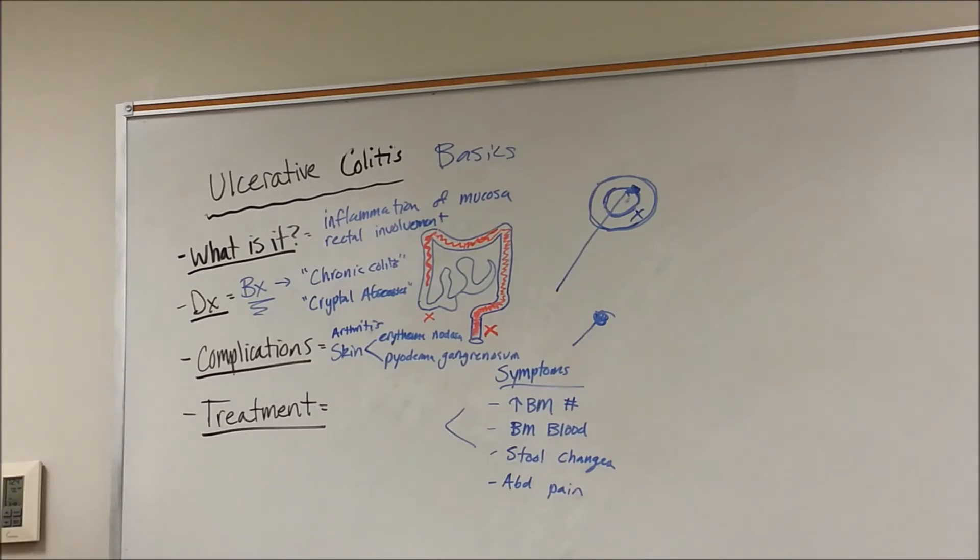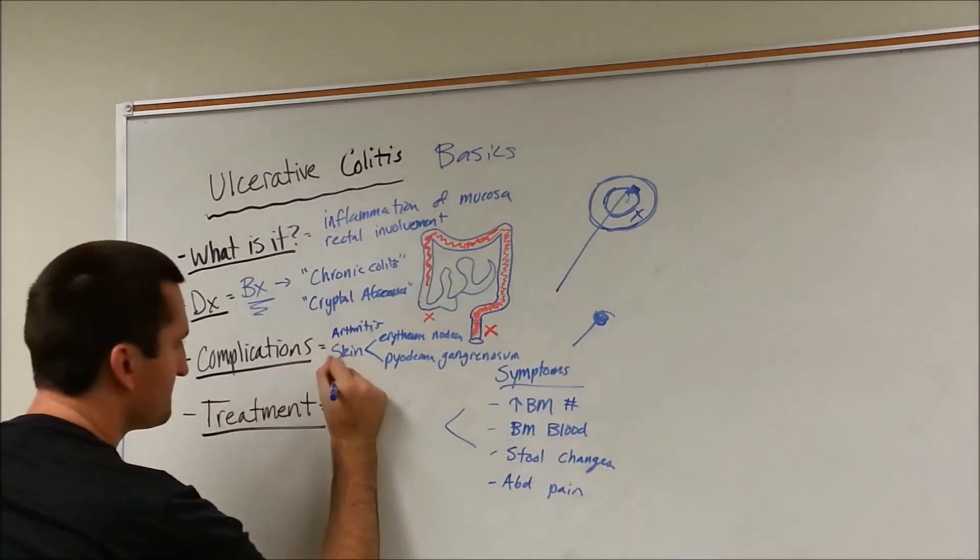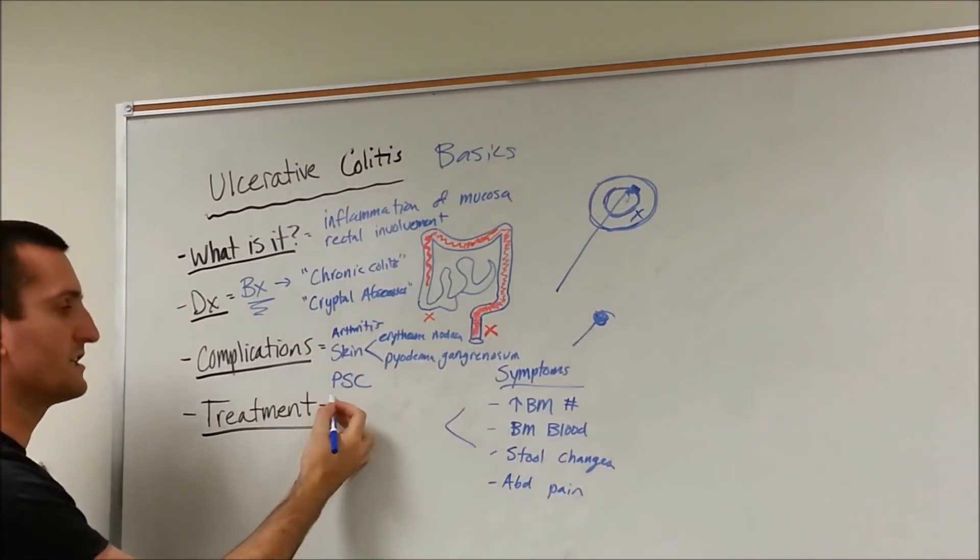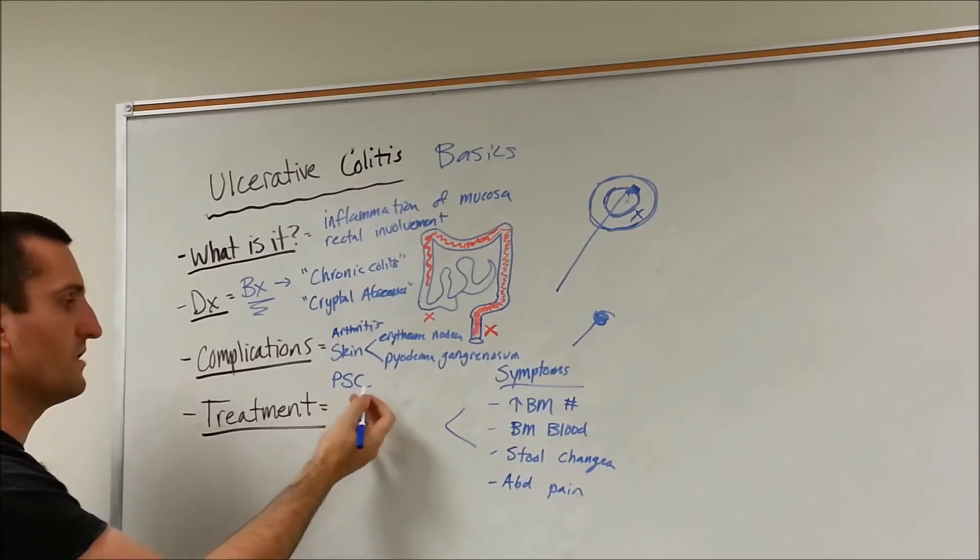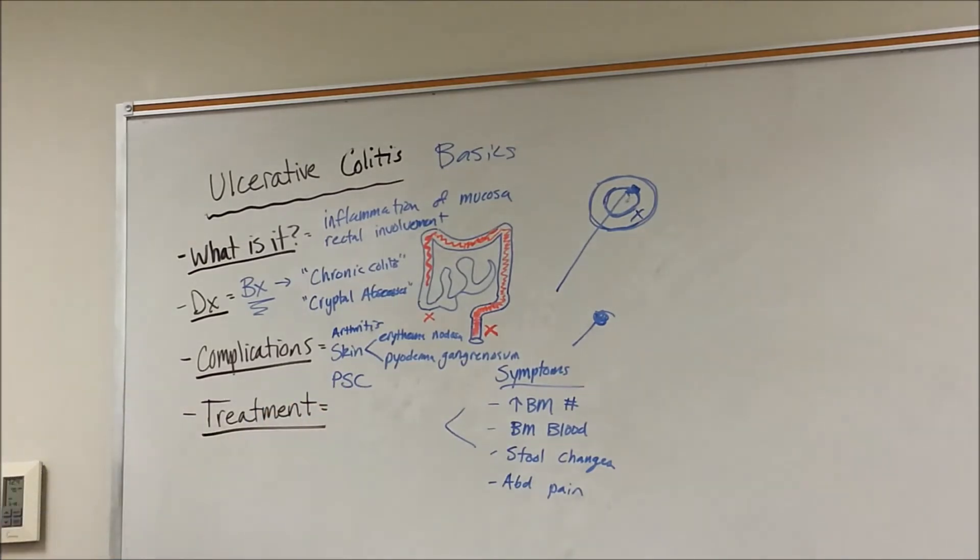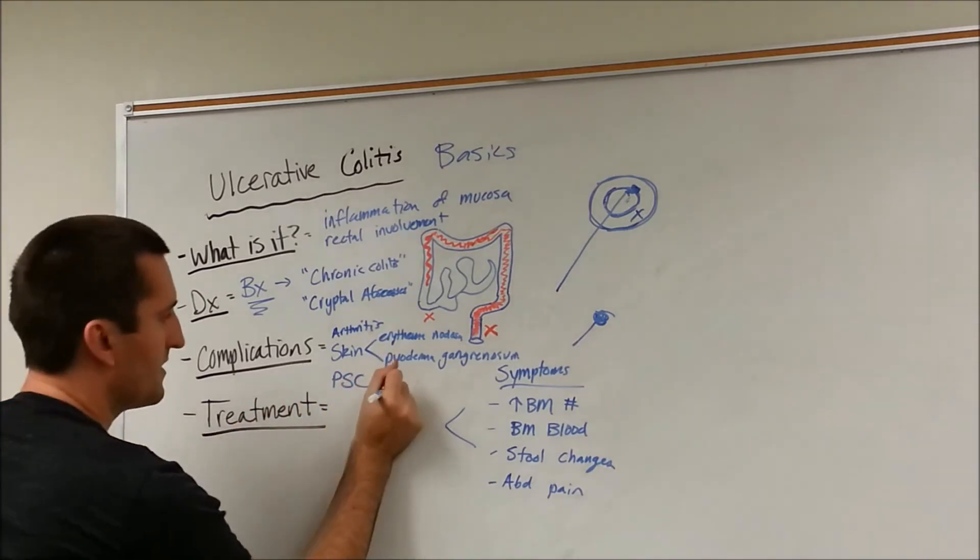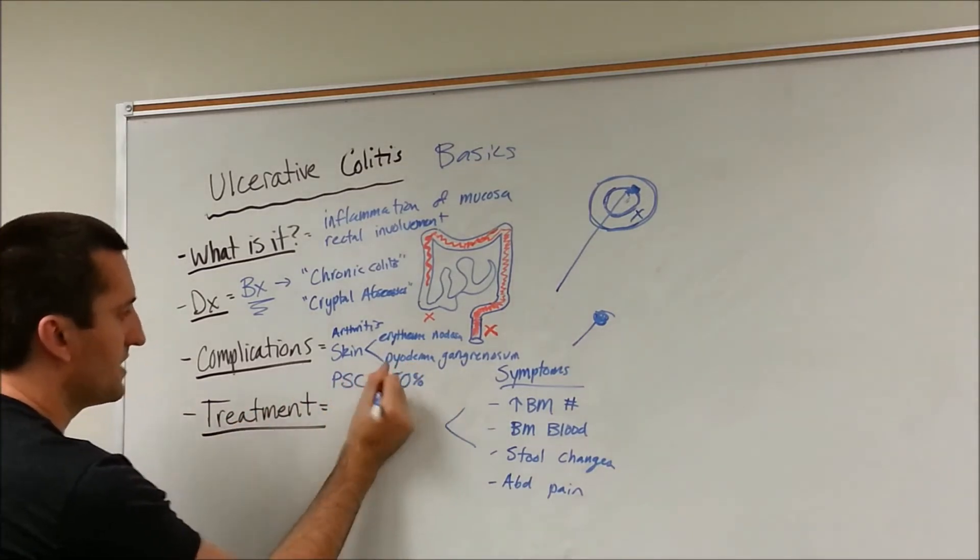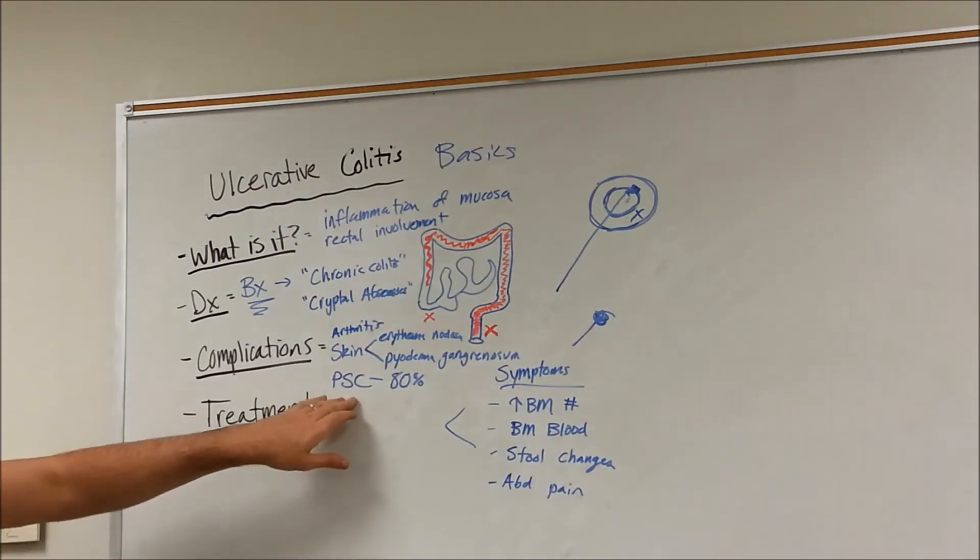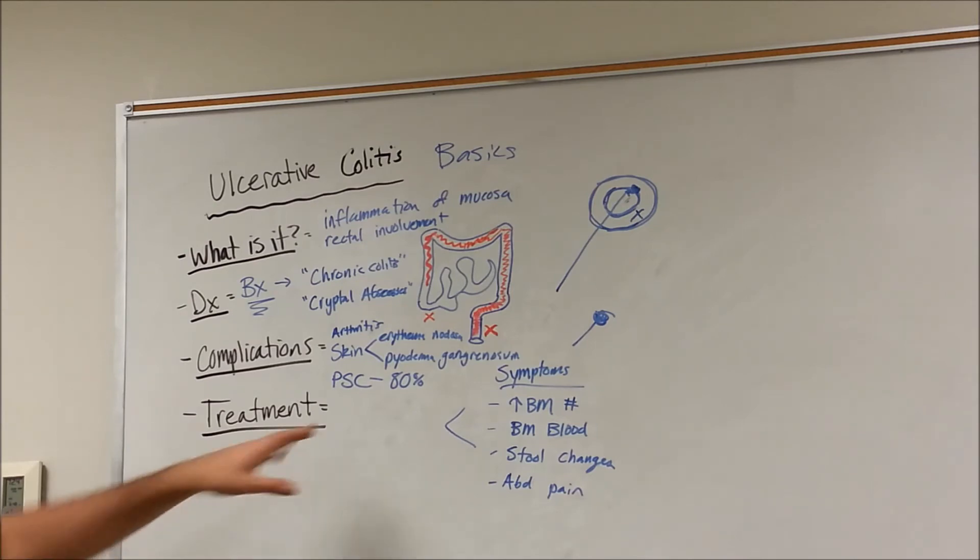You may also see some changes. PSC, it's going to stand for primary sclerosing cholangitis. So, patients with PSC, up to 80% of them will have ulcerative colitis. So, if you've ever been diagnosed or know somebody that's been diagnosed with primary sclerosing cholangitis, they may have an association with ulcerative colitis as well. It's just how it works.